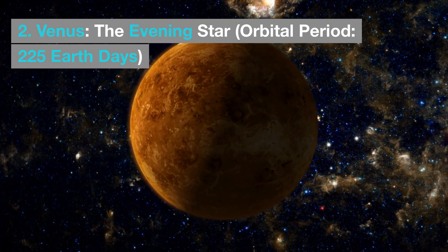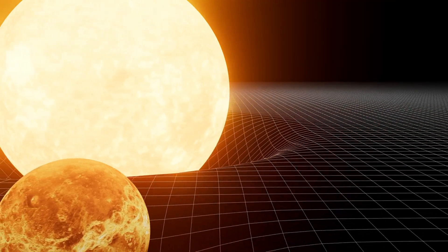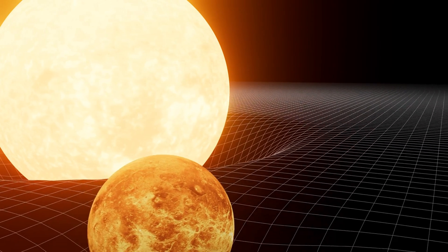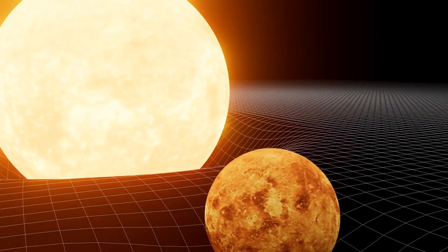Venus, the evening star, orbital period 224 Earth days. Venus has an orbital period of 225 Earth days and is sometimes referred to as Earth's sister planet because of similarities in size and composition.